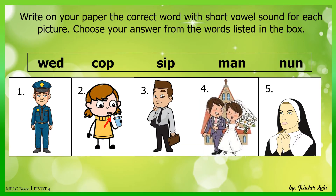For your first activity, write on your paper the correct word with short vowel sound for each picture. Choose your answer from the words listed in the box.